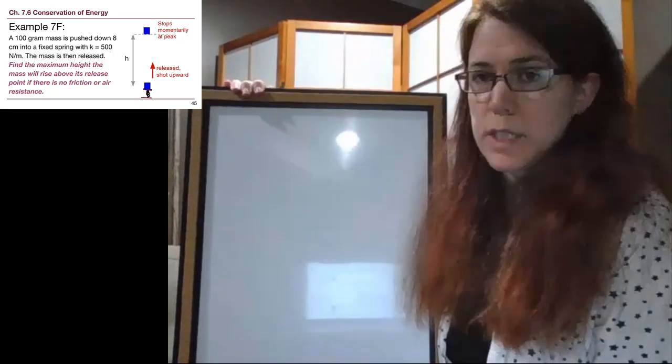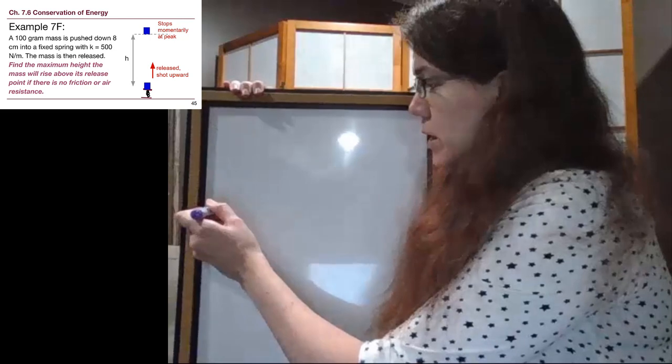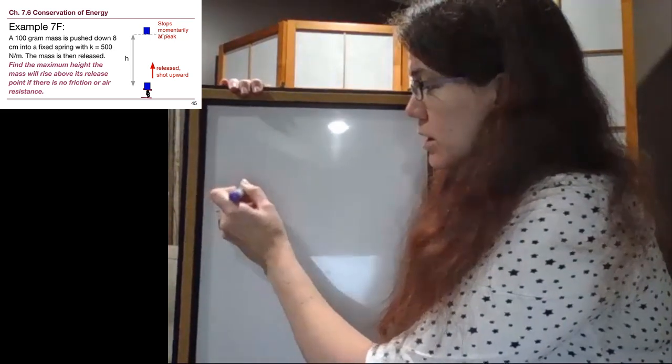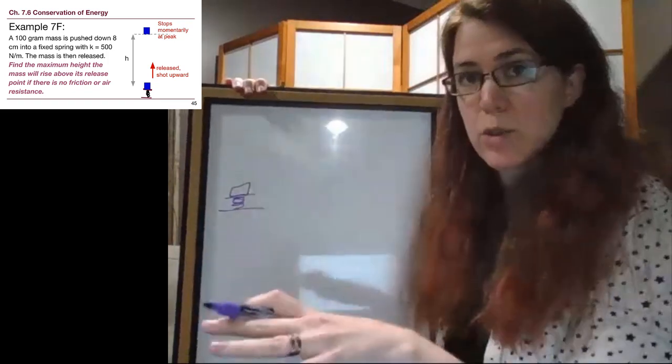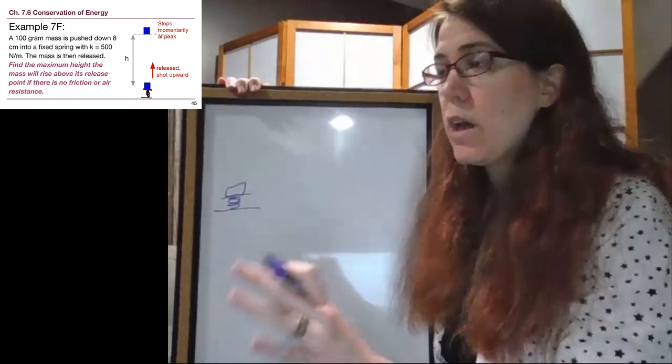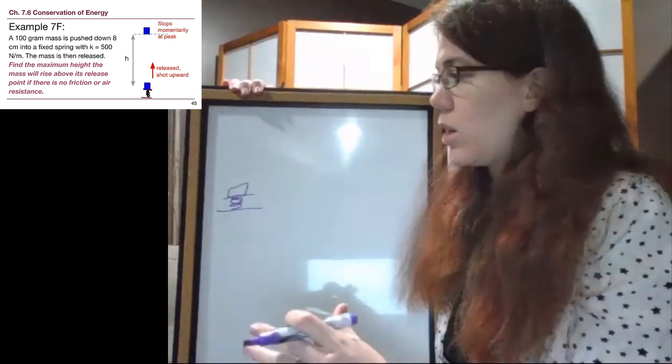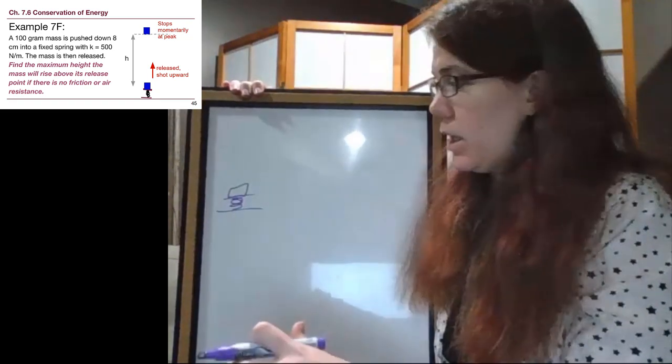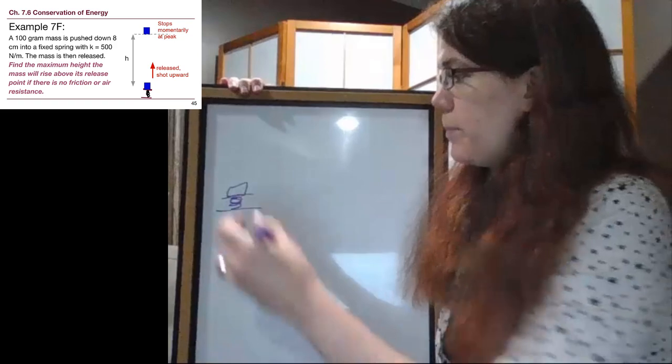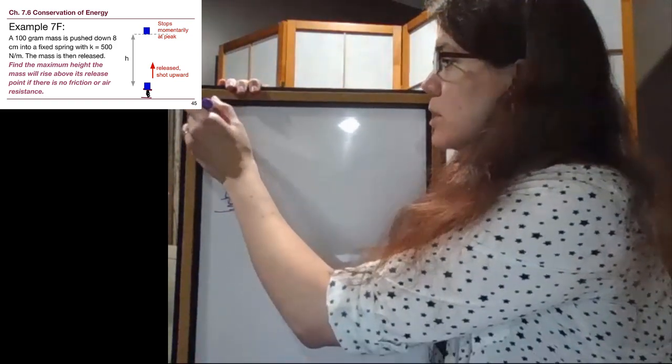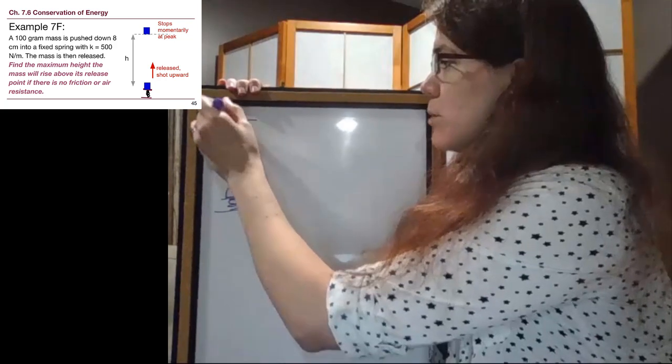But just like with any of the other examples, we can draw the picture. So we have a block that is currently pressed into a spring. So before we thought about the problem, somebody squashed a spring down and basically loaded this mass into it. And when we let go of it, it's going to be able to go all the way up until at some point it reaches a maximum height.